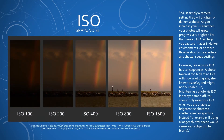The last thing is ISO, the grain or noise. ISO is simply a camera setting that will brighten or darken a photo — as you increase your ISO number your photos will grow progressively brighter. ISO can help you capture images in darker environments or give you more flexibility with aperture and shutter speed, since you balance all three when shooting. However, raising your ISO has consequences: a photo taken at too high an ISO will show a lot of grain also known as noise and might not be usable. You should only raise your ISO when you are unable to brighten the photo via shutter speed or aperture instead.